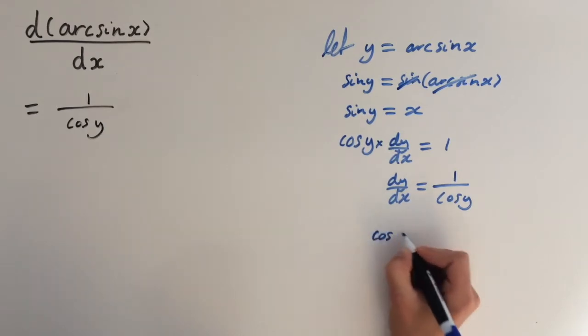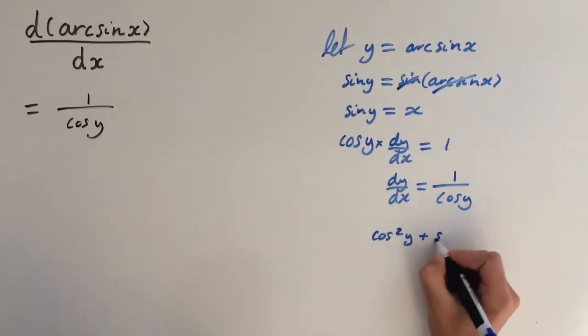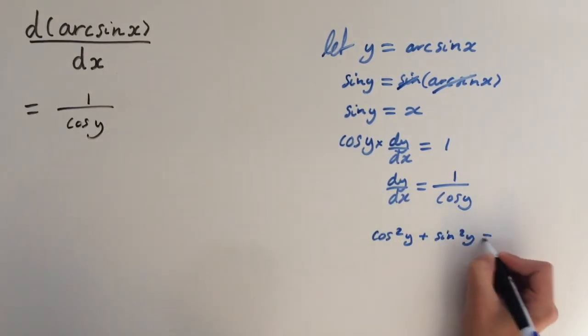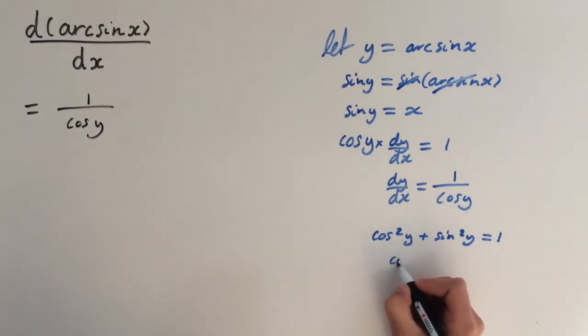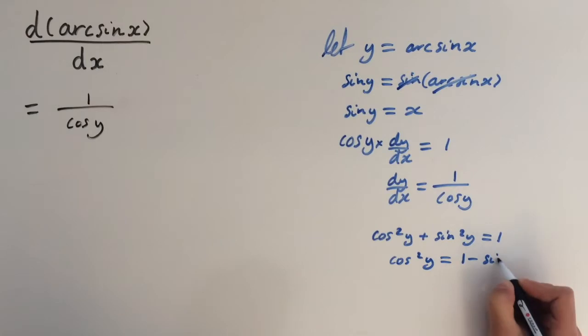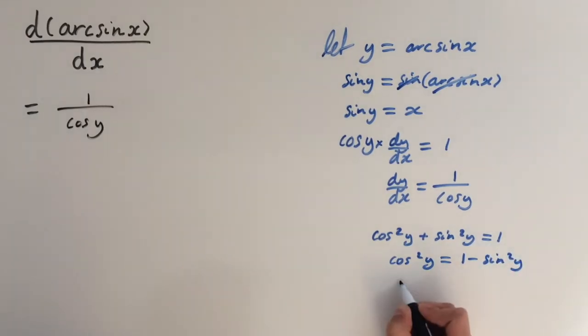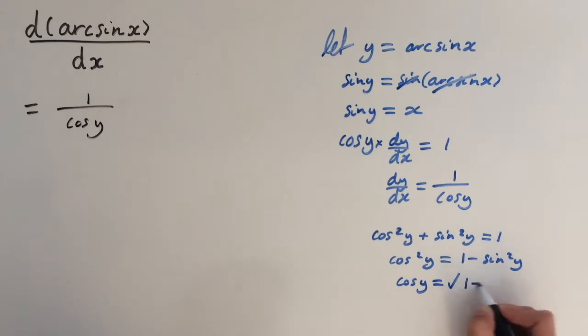So we know that cosine squared of y plus sine squared of y equals 1. That means that cosine squared of y equals 1 minus sine squared of y. So cosine of y equals the square root of 1 minus sine squared of y.